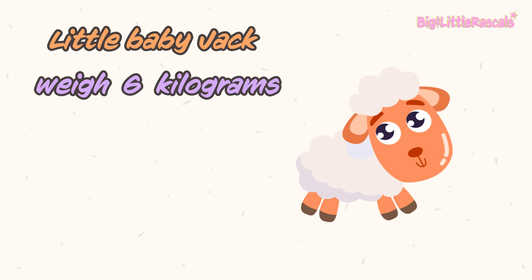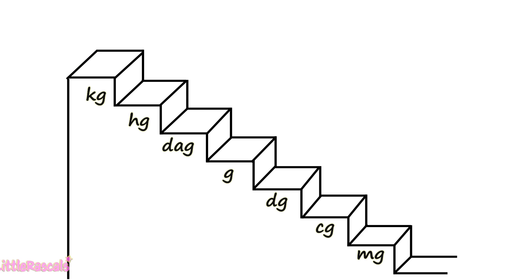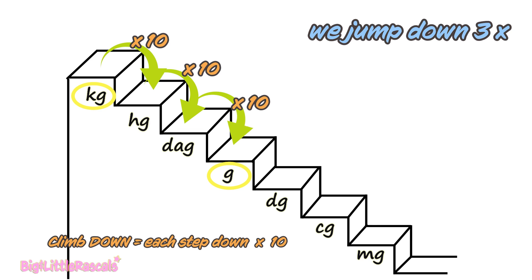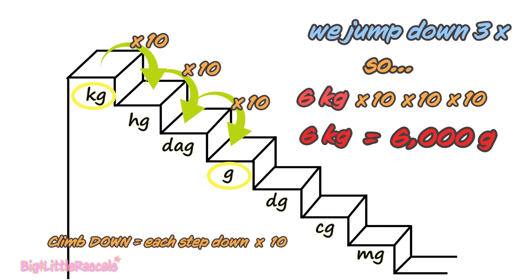Little baby Jack weighs 6 kilograms. How much does little baby Jack weigh in grams? 6 kilograms is equal to how many grams? First, find where is the kilogram — there it is. Then find the gram. You need to jump down from kilogram to gram. Remember the formula: as you are climbing down, each step you jump down, you need to multiply by 10. 1, 2, and 3 jumps. So 6 kilograms multiplied by 10, by 10, and by 10— it gives you 6,000 grams. So 6 kilograms equals to 6,000 grams.